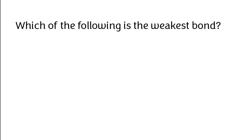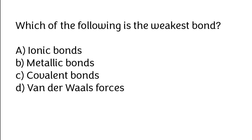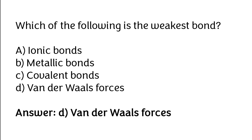Which of the following is the weakest bond? Ionic bonds, metallic bonds, covalent bonds, or van der Waals forces. The correct answer is option D: van der Waals forces is the weakest bond.